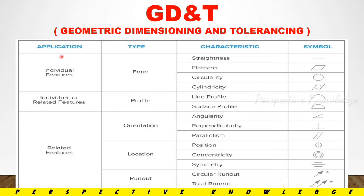We classify into 3 types: individual features, individual or related features, and related features. Individual features fall under form tolerance. What is form? Straightness, flatness, circularity, and cylindricity — these 4 properties are individual. If we have a straightness surface with two points, we have straightness. If we have a flat surface, we can find flatness. Circularity applies to a circle, and cylindricity applies to a cylinder.